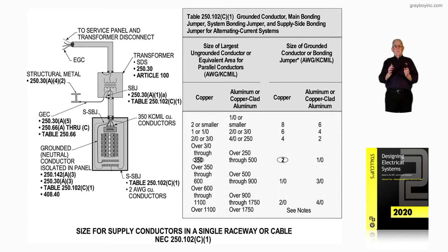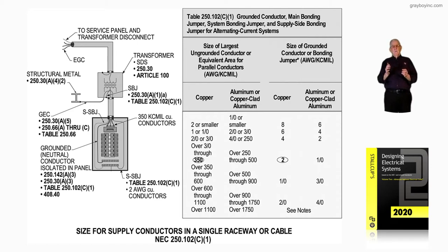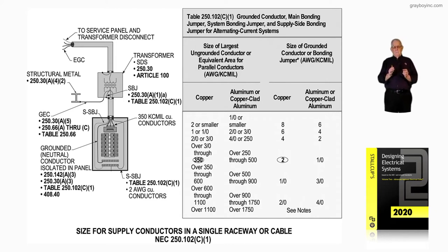The table drops down below that header information and talks about, to the left, the size of the largest ungrounded conductor or equivalent area for parallel conductors, giving you the AWG or KCMIL rating. To the right, it talks about the size of the grounded conductor or bonding jumper, again giving you the AWG size along with the KCMIL rating. That grounding or bonding jumper conductor is sized to provide an effective ground fault path to transfer fault currents when they occur.